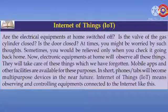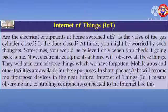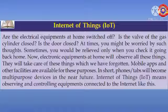At times you may be worried by thoughts like: are the electrical equipment at home switched off? Is the valve of the gas cylinder closed? Is the door closed? Sometimes you would be relieved only when you check by going back home. Now, electronic equipment at home can observe and take care of these things we have forgotten. Mobile apps and other facilities are available for these purposes. In short, phones or tabs will become multi-purpose devices in the near future. Internet of Things — IoT — means observing and controlling equipment connected to the internet.